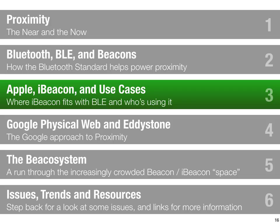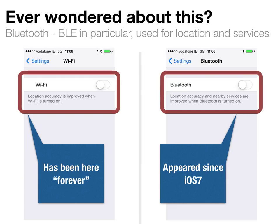Now we know where Bluetooth fits with proximity. Let's take a look at how the giants in mobile — Apple and Google — are using it. We'll start with Apple, as they were really the first to put support for proximity into their product line in a serious way and at scale. Wi-Fi has actually been used for a long time on mobile, by Apple and Google and others, to help locate you. If you've wondered why the faint grey writing under the Wi-Fi off switch says 'location will be better with this on' — here's why.